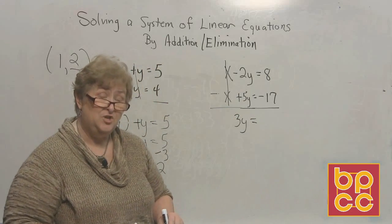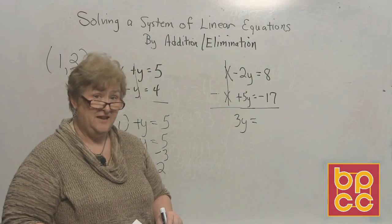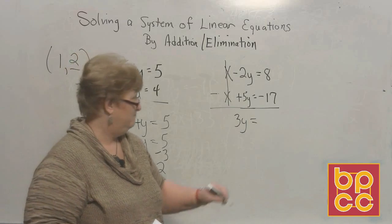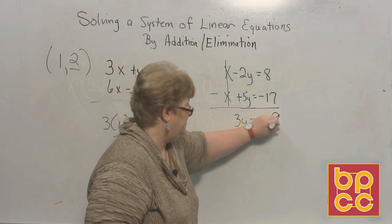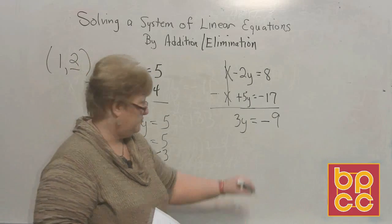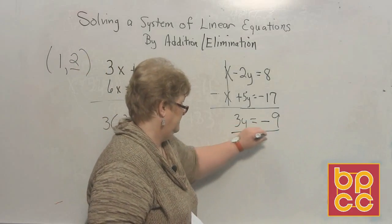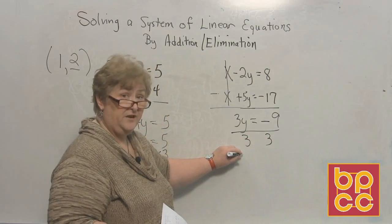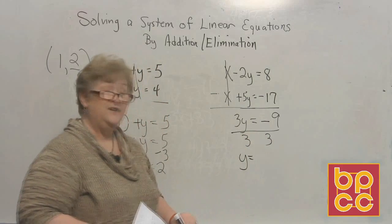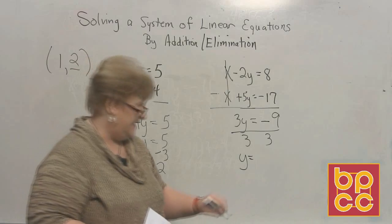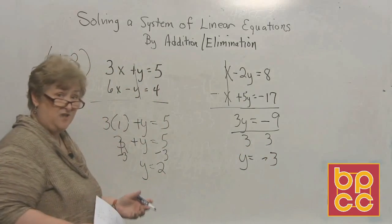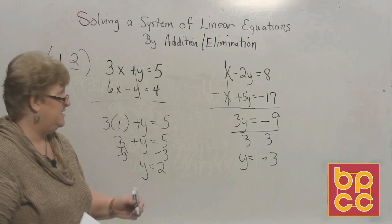And 8 added to negative 17 — I think that's going to be 9, but what kind of 9? I think it's going to be a negative 9. So now let's divide by the number of y's we have, which is 3. Three into 3 is 1y, and 3 into negative 9 is negative 3. So in this case we have solved for y, and y is negative 3.